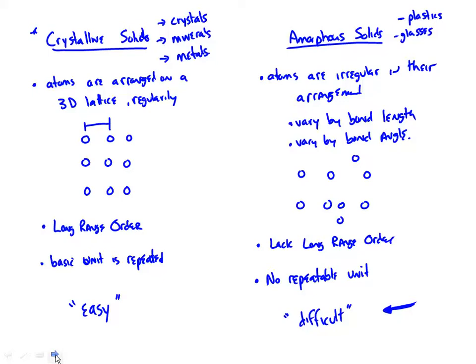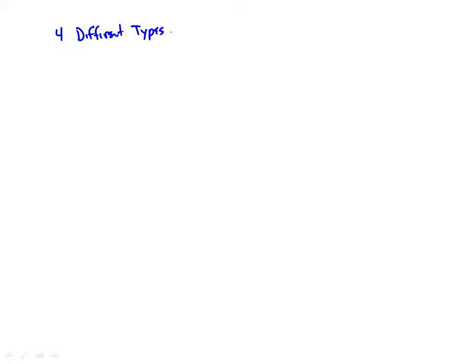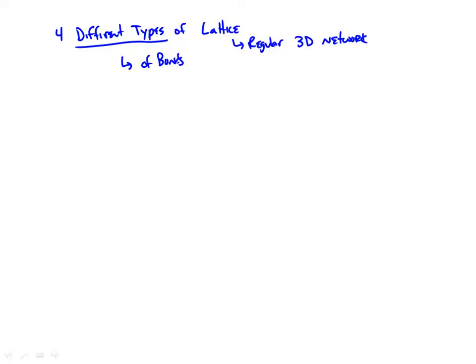Both types of solids follow a classification where there are four different types of lattices — meaning that regular three-dimensional network. There are four different types of bonds that can hold those lattices together, and we've already talked about three of the four types.